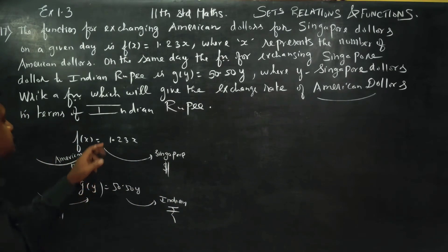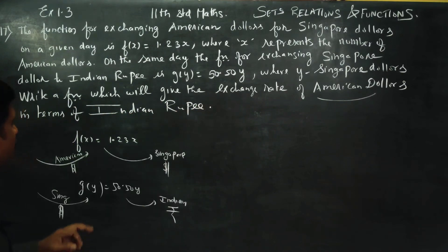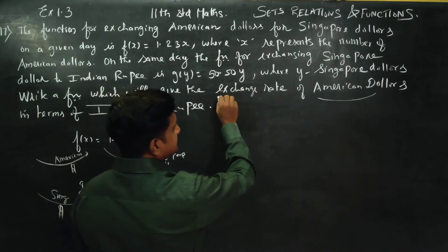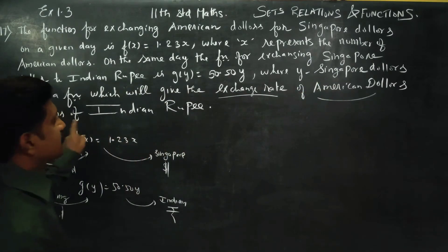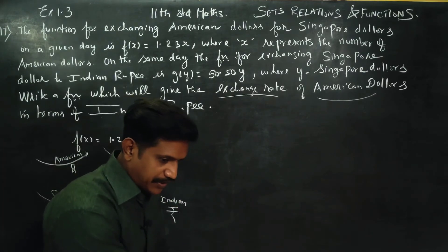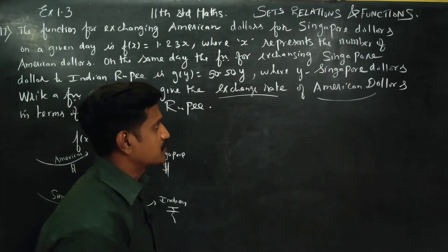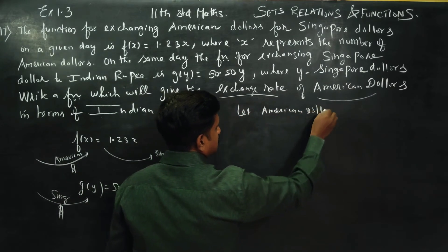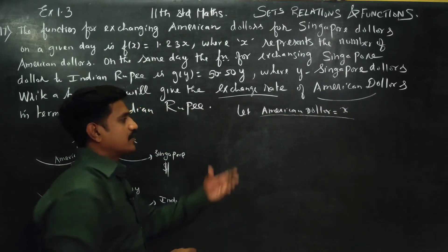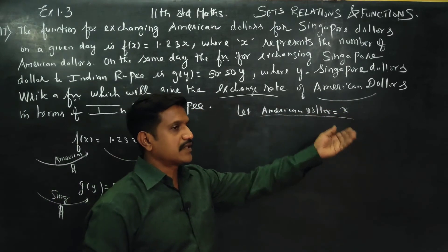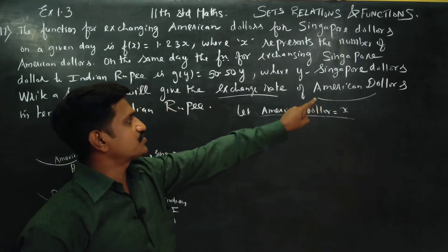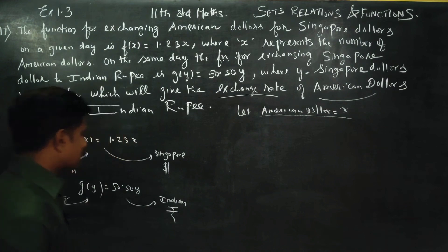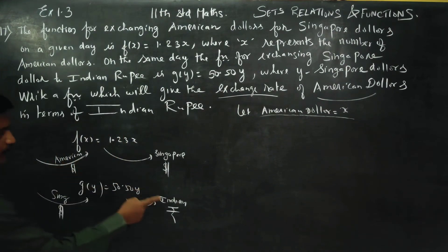Now, write a function which will give the exchange rate for American Dollars in terms of Indian Rupees. I want the exchange rate of American Dollars in terms of Indian Rupees. American Dollars is equal to x.